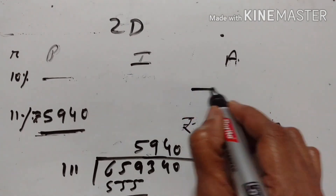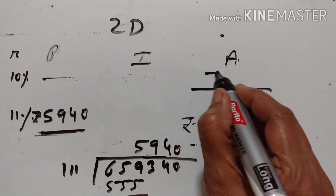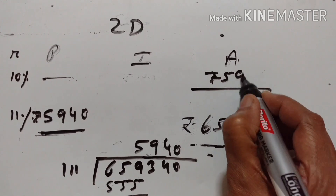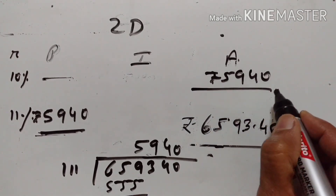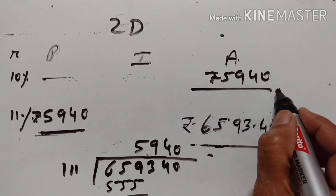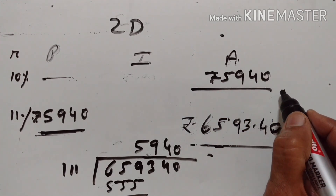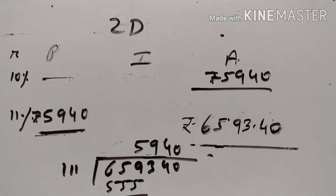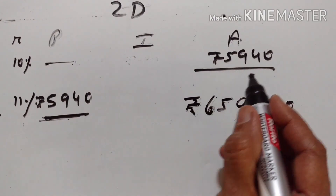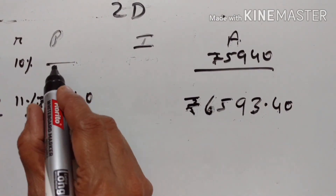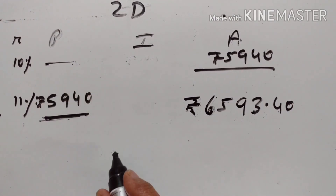So if the amount is equal to Rs. 5940, this is the amount at the end of the first year. From this, let us find the principal of the first year.